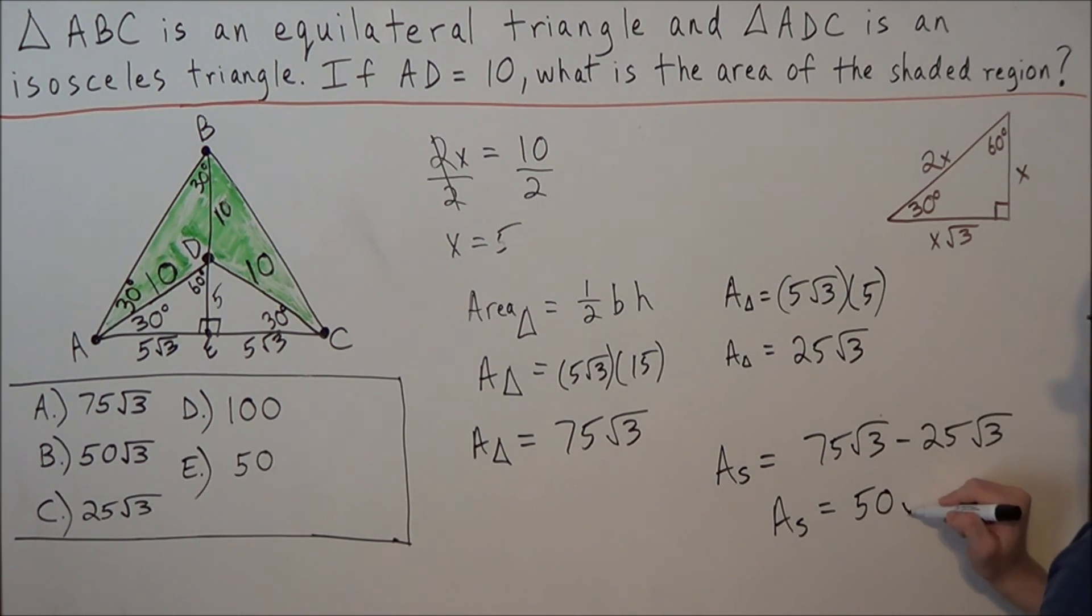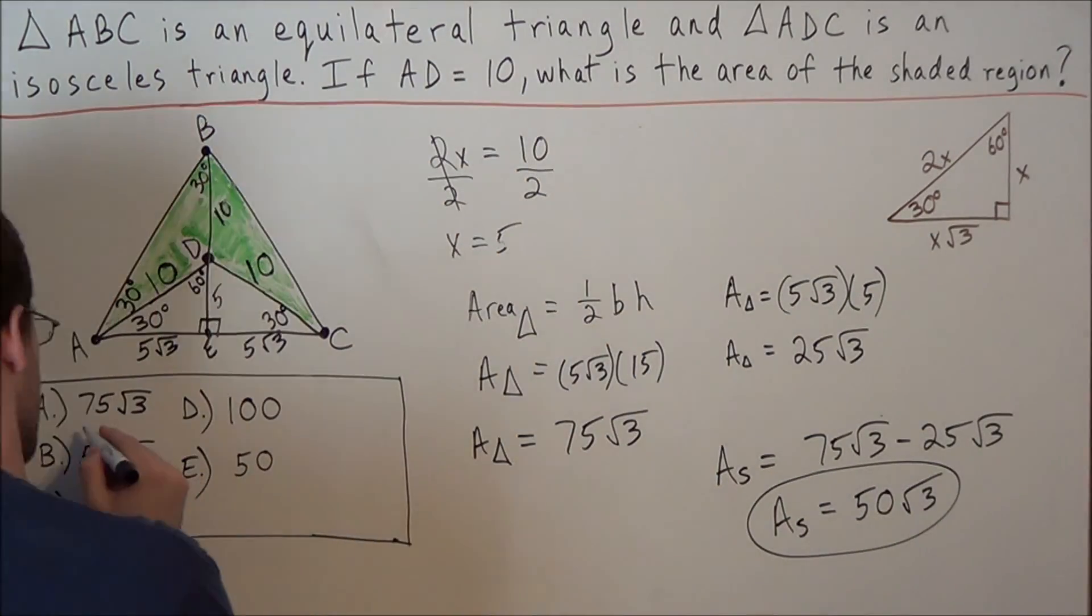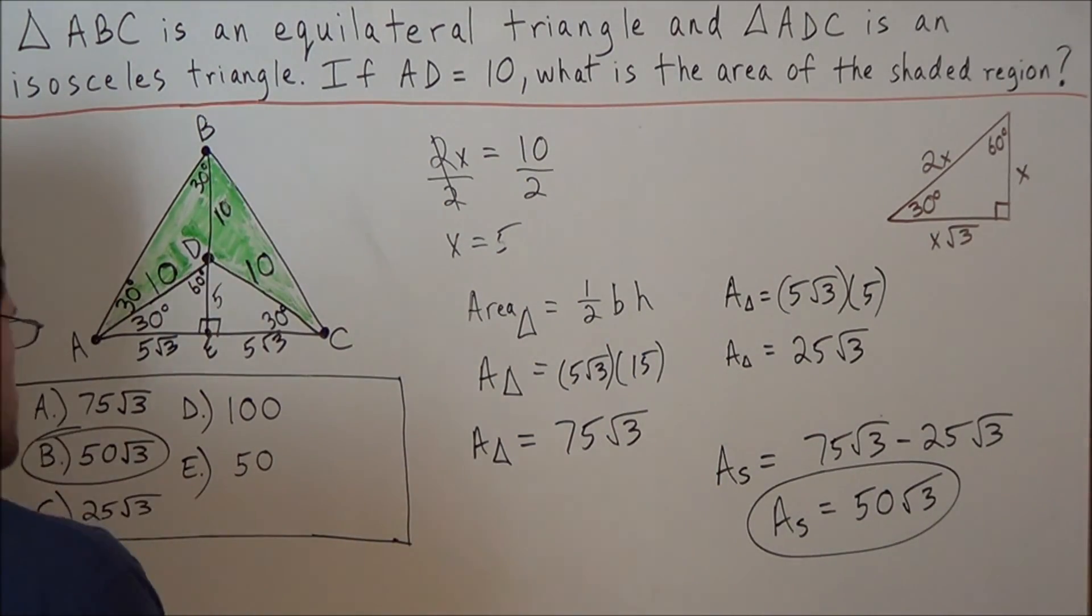that means we have 50 radical 3s. So our answer to this problem is going to be choice B. 50 radical 3.